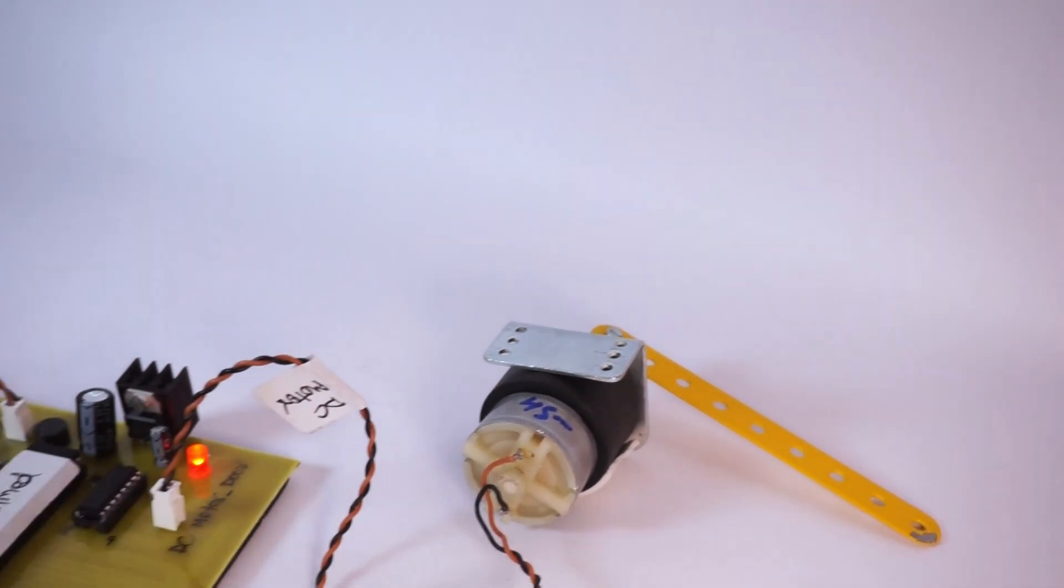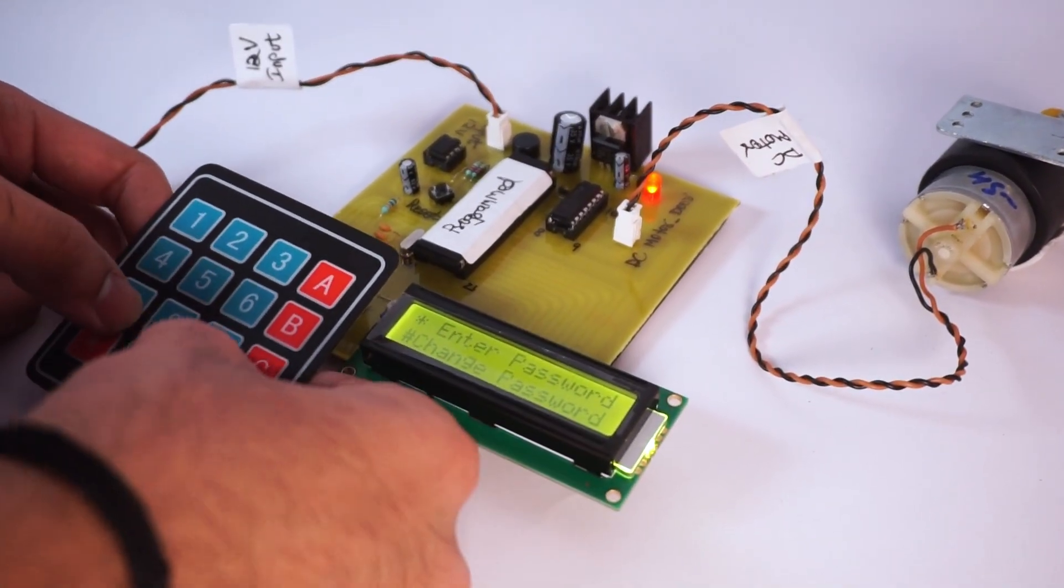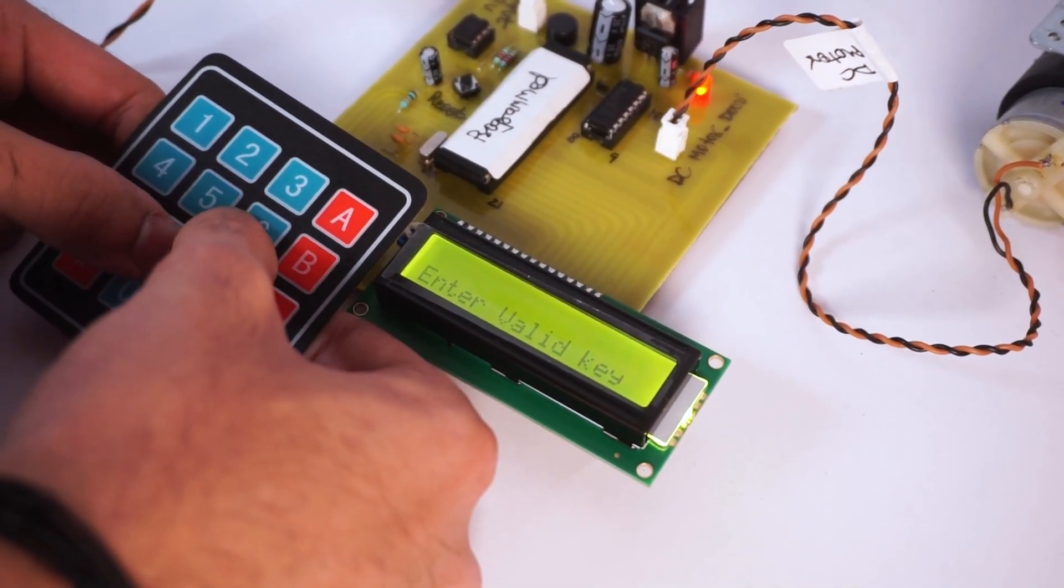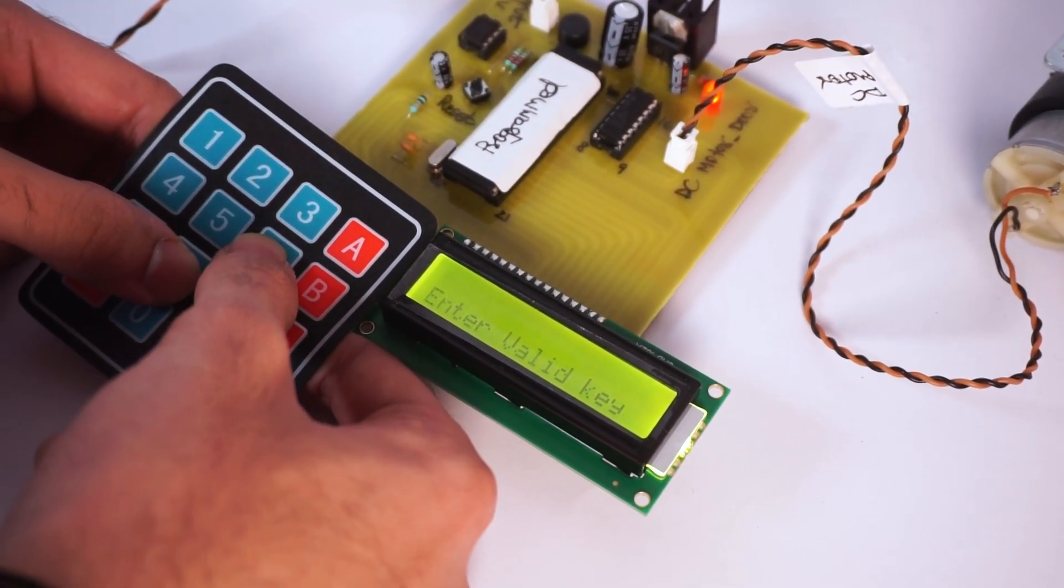Suppose that we forgot our password, so we can go into the system mode using 786.